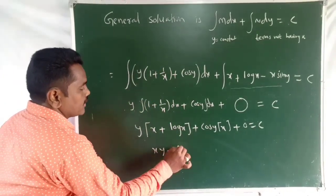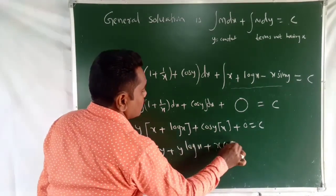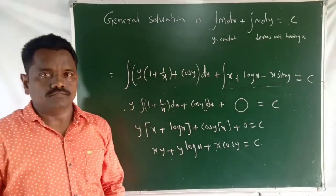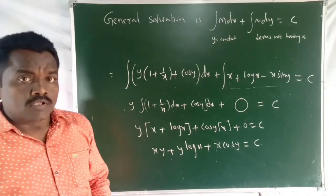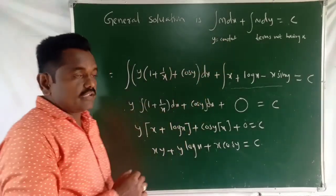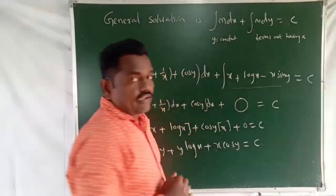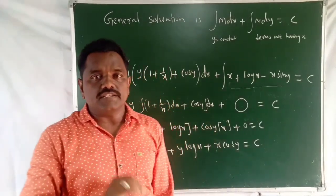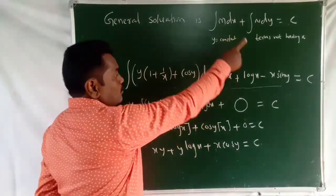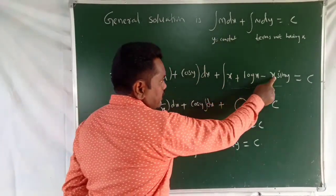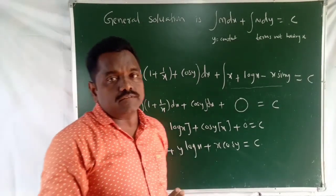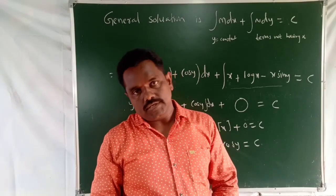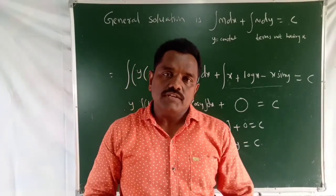So the general solution is XY + Y log X + X cos Y = C. This is the general solution of the given differential equation. Remember: in M dx, Y is constant; in N dy, take only Y terms (terms not having X). This is the Exact Differential Equation method, one of the most important methods in first order and first degree differential equations.